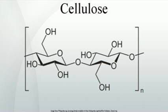Hemicellulose is a polysaccharide related to cellulose that comprises about 20% of the biomass of most plants. In contrast to cellulose, hemicellulose is derived from several sugars in addition to glucose, especially xylose but also including mannose, galactose, rhamnose, and arabinose. Hemicellulose consists of shorter chains, around 200 sugar units. Furthermore, hemicellulose is branched, whereas cellulose is unbranched.